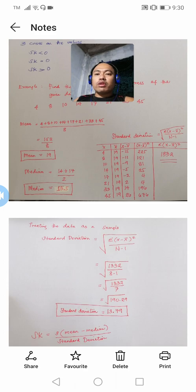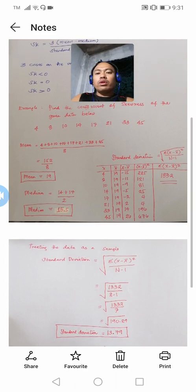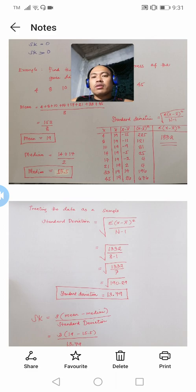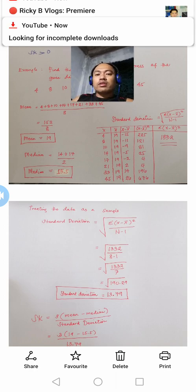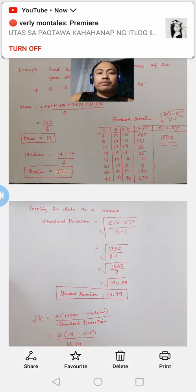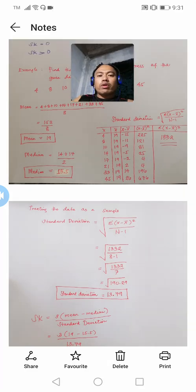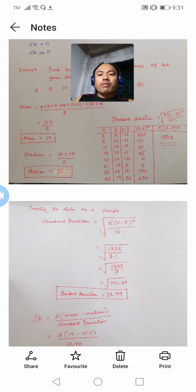How about the standard deviation of the given distribution? We will be using the formula of the standard deviation treating the data as a sample. It is given by the formula: the square root of the summation of (x minus x-bar) squared, all over n minus 1.